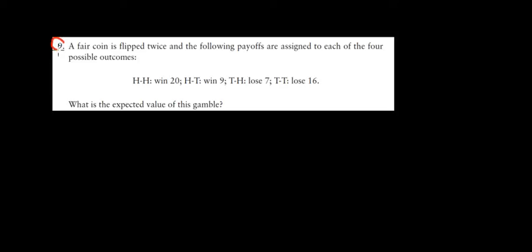Let's have a look at question 9 in this video. So a fair coin is flipped twice and the following payoffs are assigned to each of the four possible outcomes. Here are the payoffs. What is the expected value?